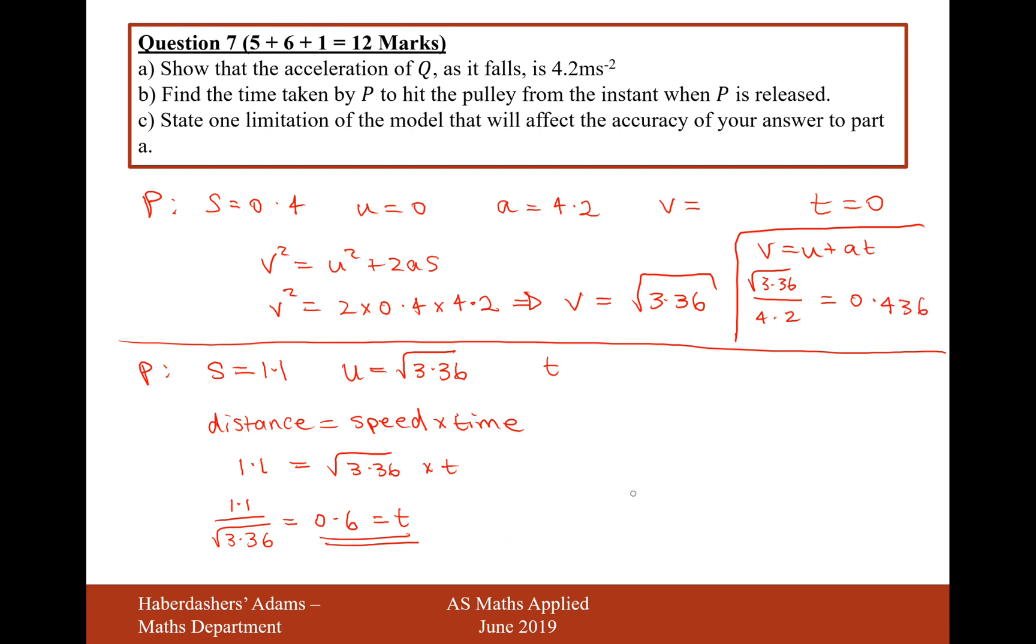And now we're just going to add these two times together. Therefore the total time is going to be 0.600 and 0.436, and that's going to give us a total time of 1.04 to three significant figures. So there we are, that's the answer for part B.